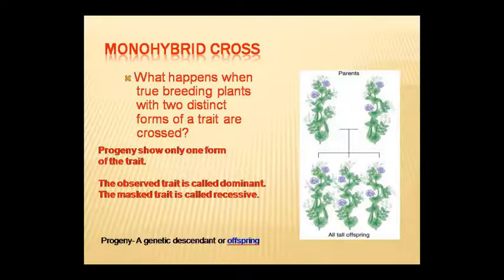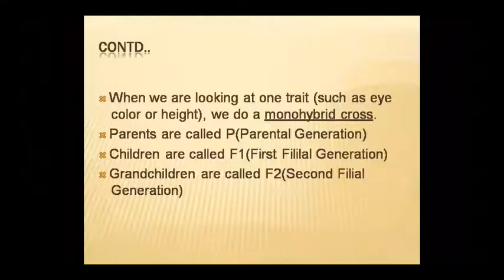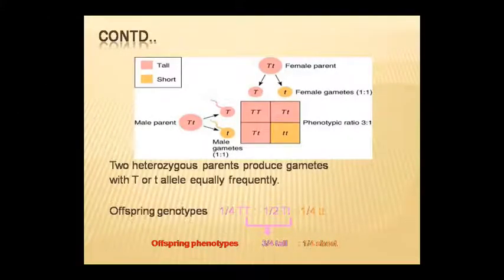Monohybrid cross: when studying one trait — such as eye color or height — it is called a monohybrid cross. Parents are represented by P (parental generation), their children as F1 (first filial generation), and grandchildren as F2 (second filial generation). Crossing tall and short plants produced female gametes; phenotypic ratio 3:1 and genotypic ratio 1:2:1 were obtained. From two heterozygous parents, gametes capital T and small T were formed equally, producing the observed offspring ratio.